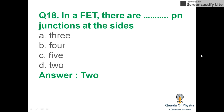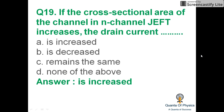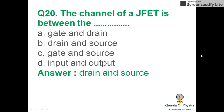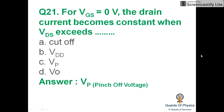In a JFET there are two P-N junctions at the sides. If the cross-sectional area of the channel in an N-channel JFET is increased, the drain current increases because there is more gap for the current to pass through. The channel of a JFET is between the drain and the source. The drain current becomes constant when VDS exceeds Vp (pinch-off voltage); at VGS equal to zero and VDS greater than pinch-off voltage, the drain current becomes constant.